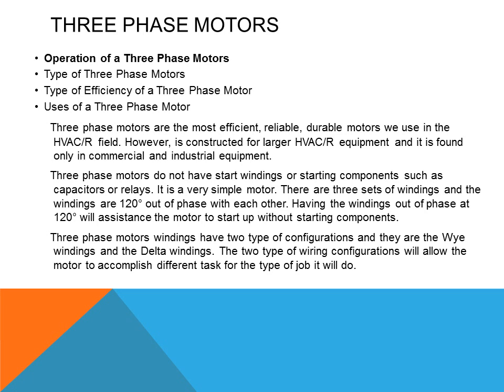Three-phase motors are the most efficient, reliable, durable motors we use in the HVAC field. However, they are constructed for larger HVAC equipment and are found only in commercial and industrial equipment. Three-phase motors do not have start windings or starting components such as capacitors or relays — it is a very simple motor. There are three sets of windings and the windings are 120 degrees out of phase with each other, which assists the motor to start up without starting components. The three-phase motor windings have two types of configurations: the Y winding and the delta winding, which allow the motor to accomplish different tasks for the type of job it will do.